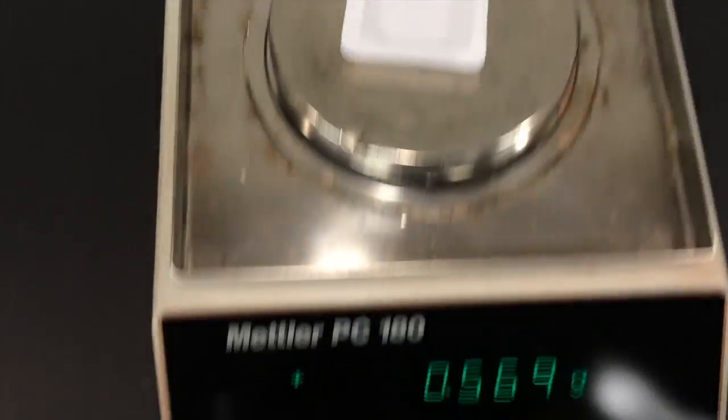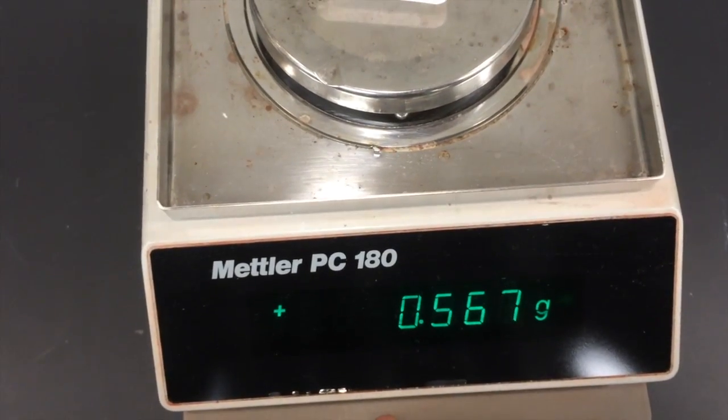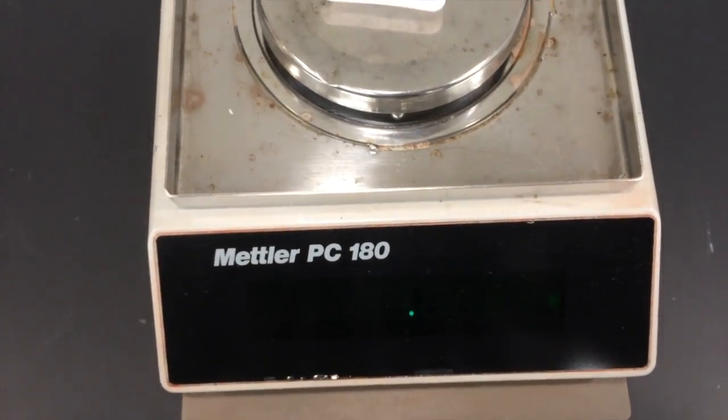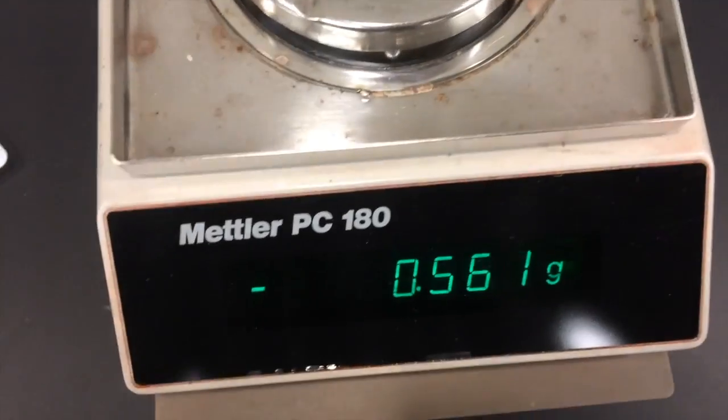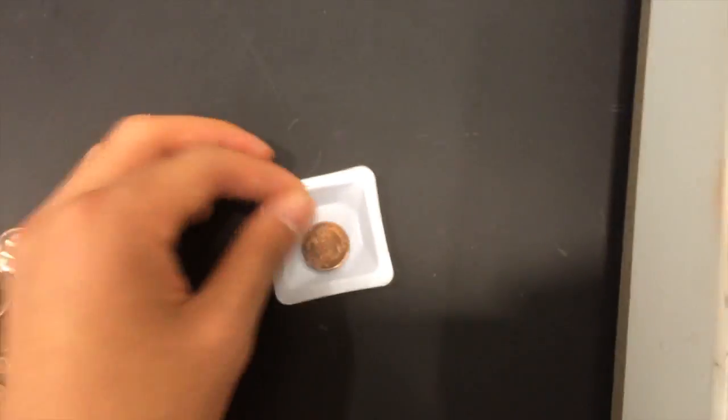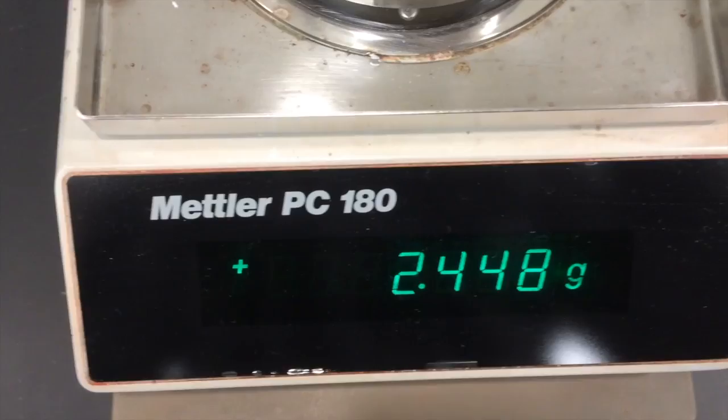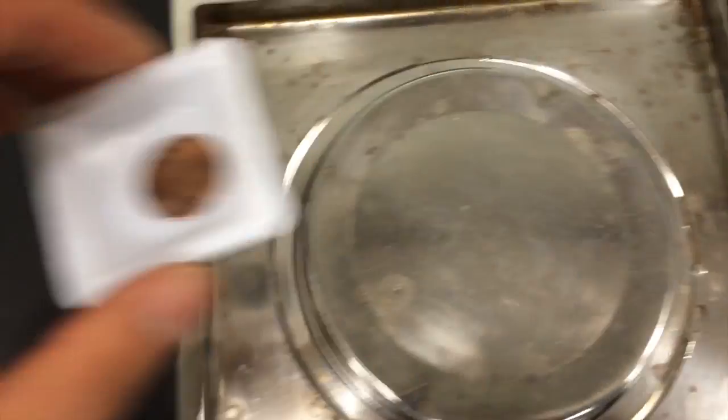To weigh your individual pennies, go ahead and zero your scale using the tare function, and then put each individual penny into the weigh boat. This works best if your lab partner records the year of the penny while you record the mass of each penny.